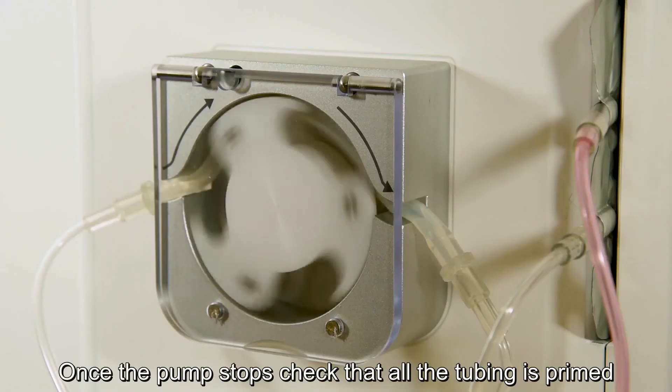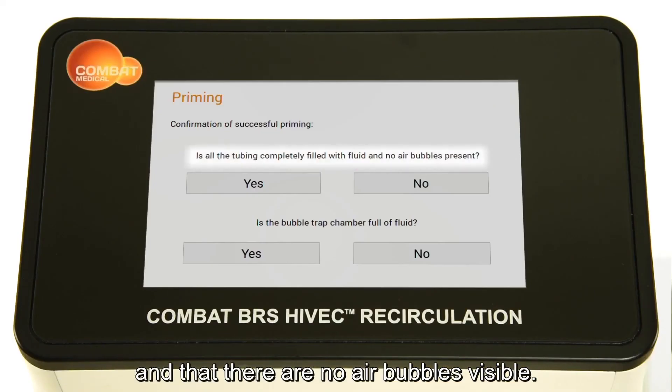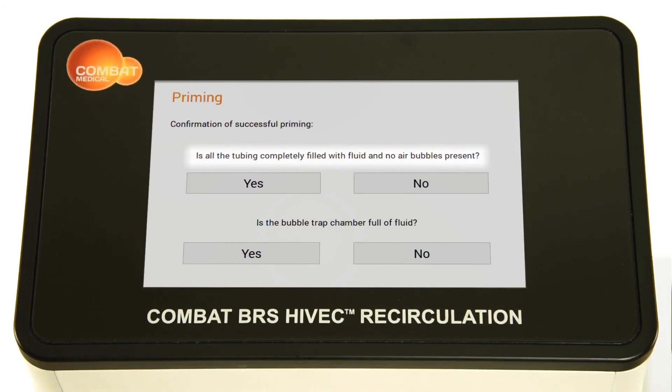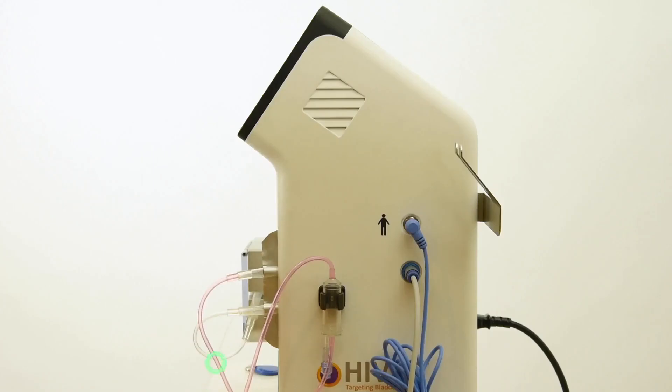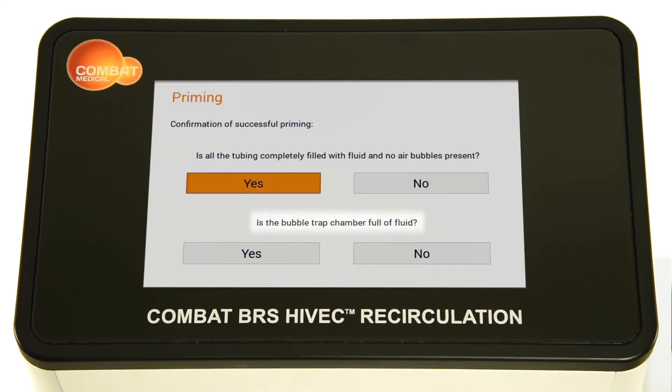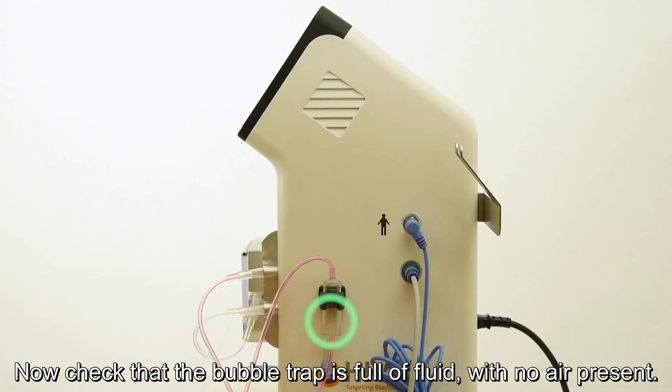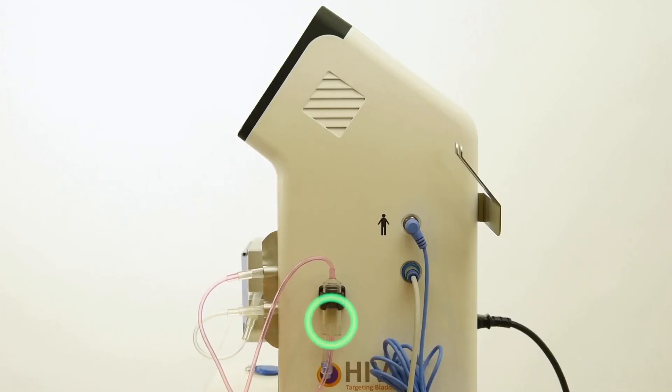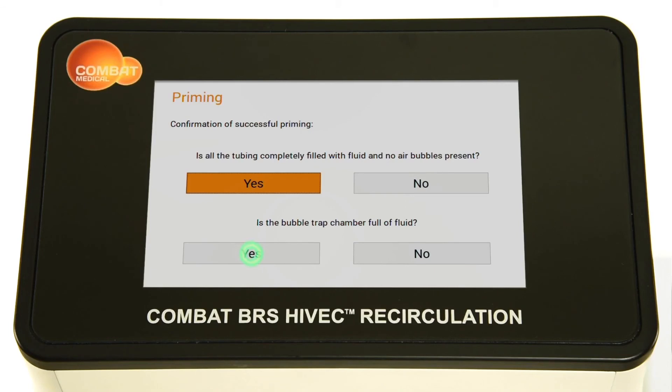Once the pump stops, check that all the tubing is primed and that there are no air bubbles visible. And confirm. Now check that the bubble trap is full of fluid with no air present. And confirm.